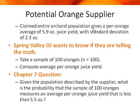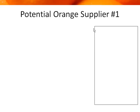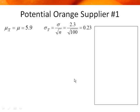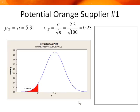Spring Valley OJ wants to know if they're telling the truth, so they take a sample of 100 oranges and compute the average per-orange juice yield. From Chapter 7 on sampling distributions: given that the population described by the supplier has an average of 5.9 ounces and a standard deviation of 2.3, what is the probability that a sample of 100 oranges measures an average juice yield less than 5.5 ounces? We use a sampling distribution with mean 5.9 and convert the standard deviation to standard error of the mean.